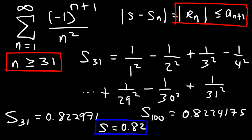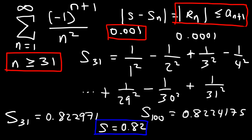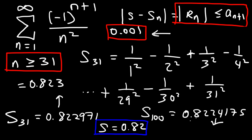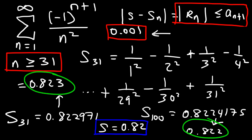Now what happens if we set our error to 0.01? Well, since we already set the error to 0.001, let's say we wanted the answer correct to three decimal places instead. For me personally, if I want the answer correct to three decimal places, I would choose an error of 0.0001. But let's say we set the error to 0.001 — in this case n would still be 31. Rounding 0.822971 to three decimal places gives 0.823, and rounding 0.8224175 gives 0.822. Notice these answers are not the same. So if you want to round to three decimal places, I recommend choosing an error 10 times smaller — 0.0001 — and you'll be on the safe side.